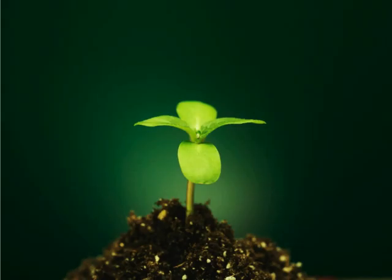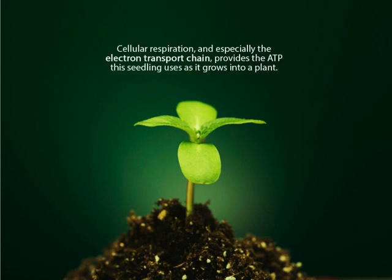For example, the cells of this seedling require much ATP to produce proteins and replicate DNA. Cellular respiration, and especially the electron transport chain, provides the ATP this seedling uses as it grows into a plant.